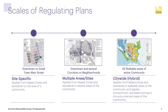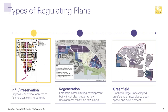These are examples of Regulating Plans on different types of projects. On the left-hand side is infill preservation, where the emphasis is on new development fitting into clear existing patterns — making more of what already exists. The second type is a regeneration option, where some existing development is present but significant new development and new blocks are anticipated, regenerating land into new purposes. The third is Greenfield — a large vacant parcel with nothing existing, being developed into new communities or neighborhoods.